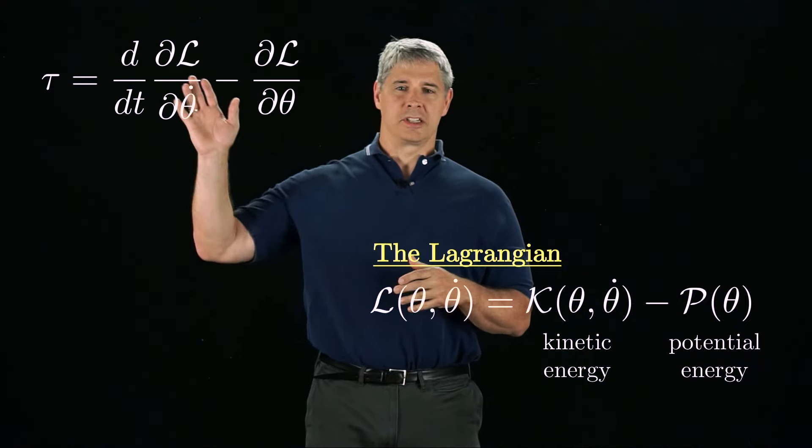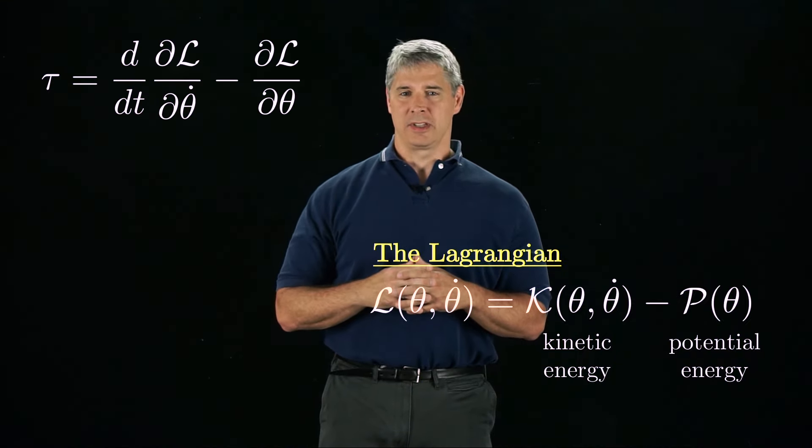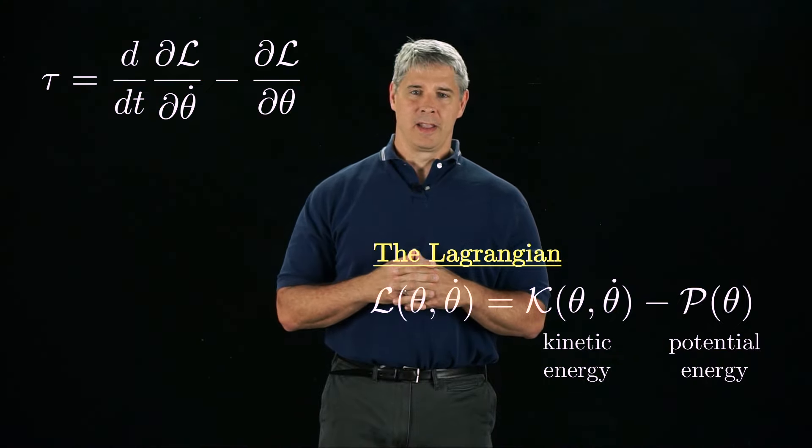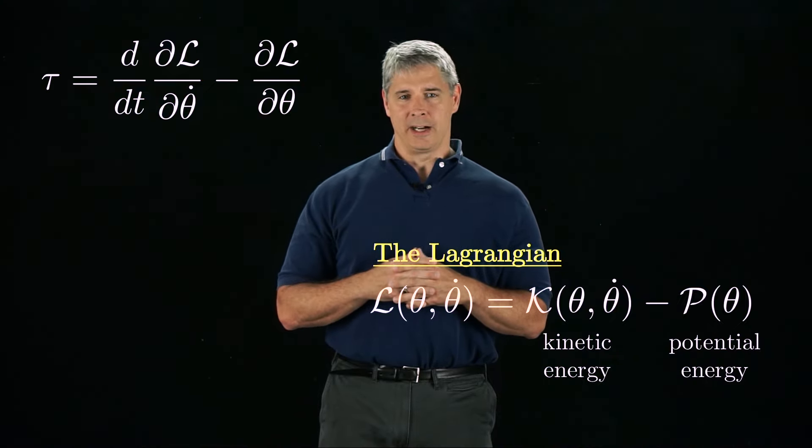The vector of joint forces and torques, τ, is equal to the time derivative of the partial derivative of L with respect to θ̇, minus the partial derivative of L with respect to θ.